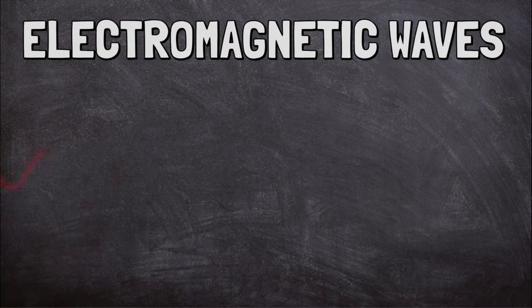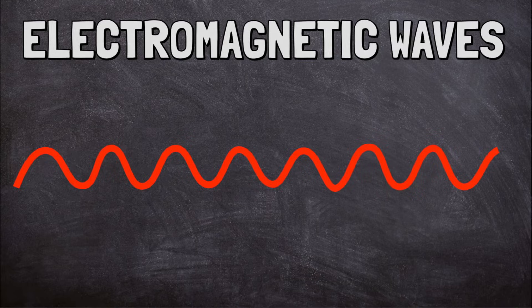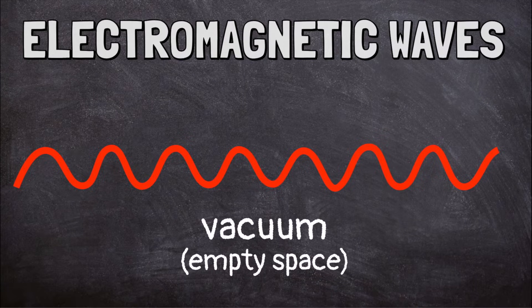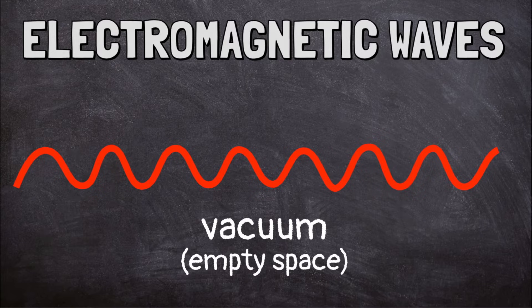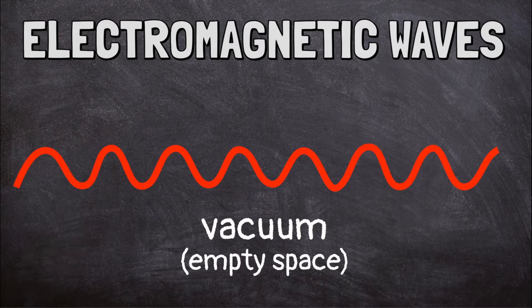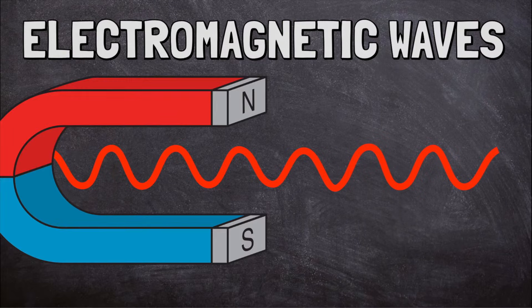Electromagnetic waves do not have to travel through something. They can move through a vacuum, empty space, without any air, water, or solid objects. Electromagnetic waves don't rely on molecules colliding like mechanical waves. This type of wave moves through the charged particles in an electrical or magnetic field.